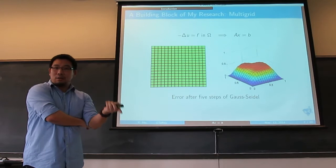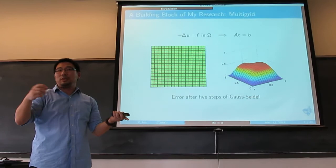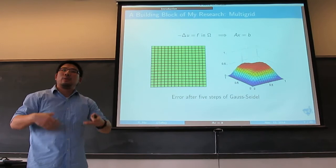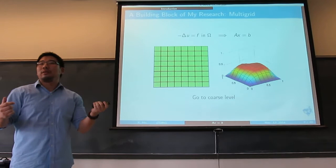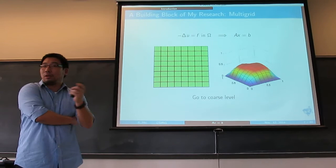Those smooth errors — you can represent them well on the coarse grid. Also, the oscillatory part needs a fine grid to represent it, but now it becomes smooth, so you can go to the coarse grid. I project the error to the coarse grid — you see it doesn't change much in shape; you don't lose much information when going to the coarse grid.